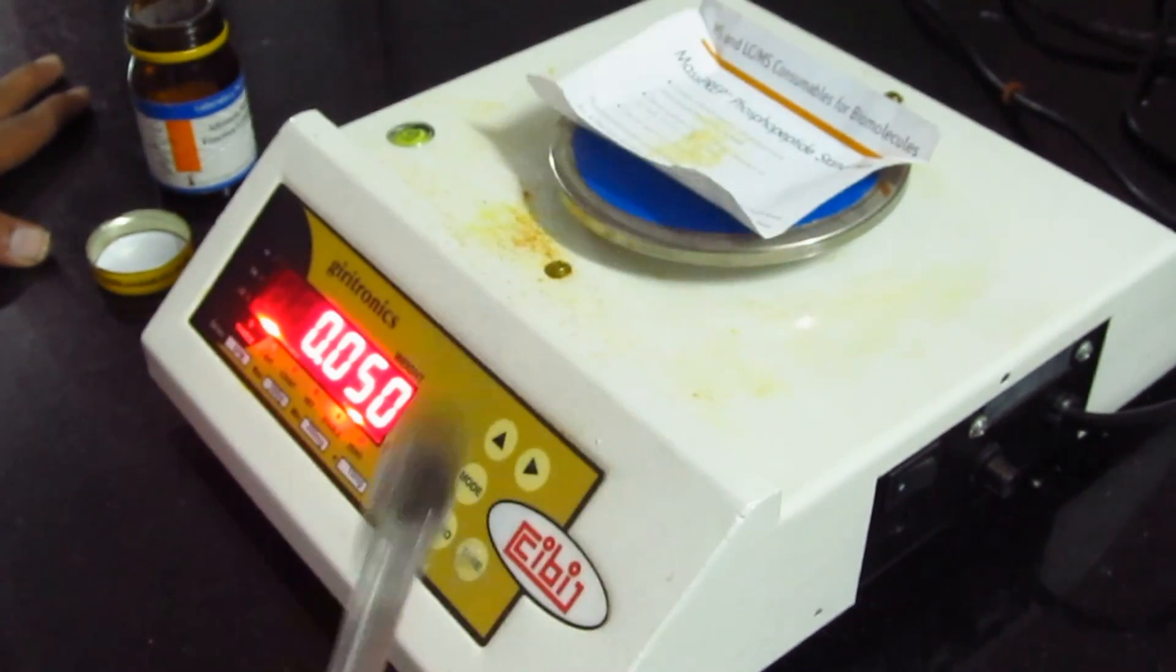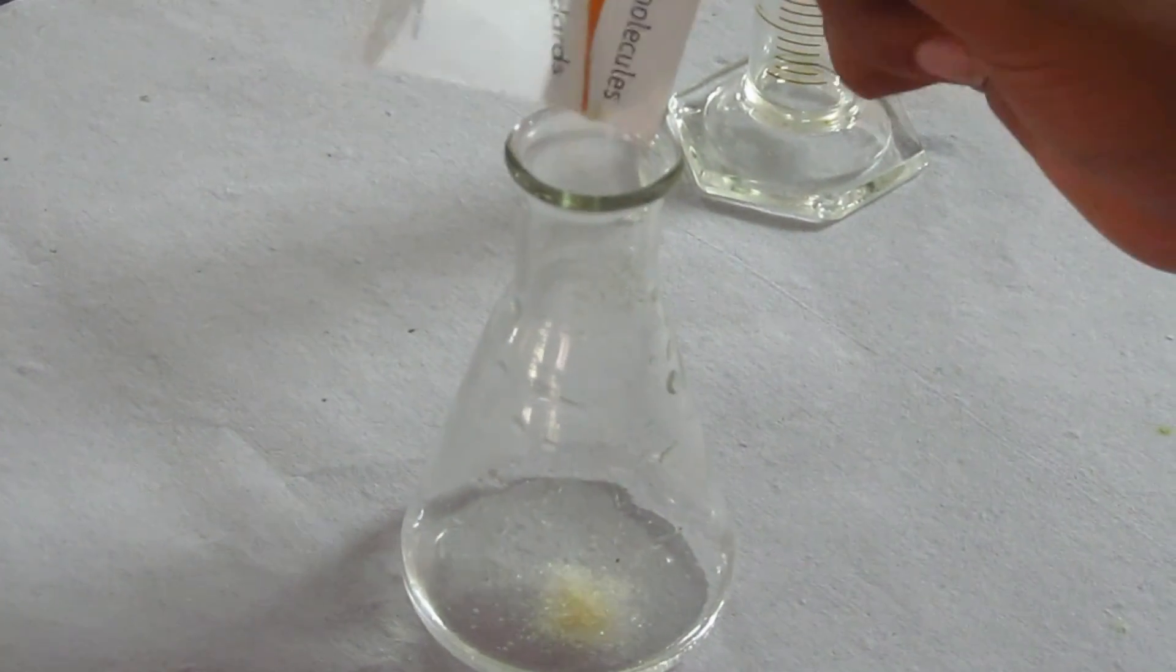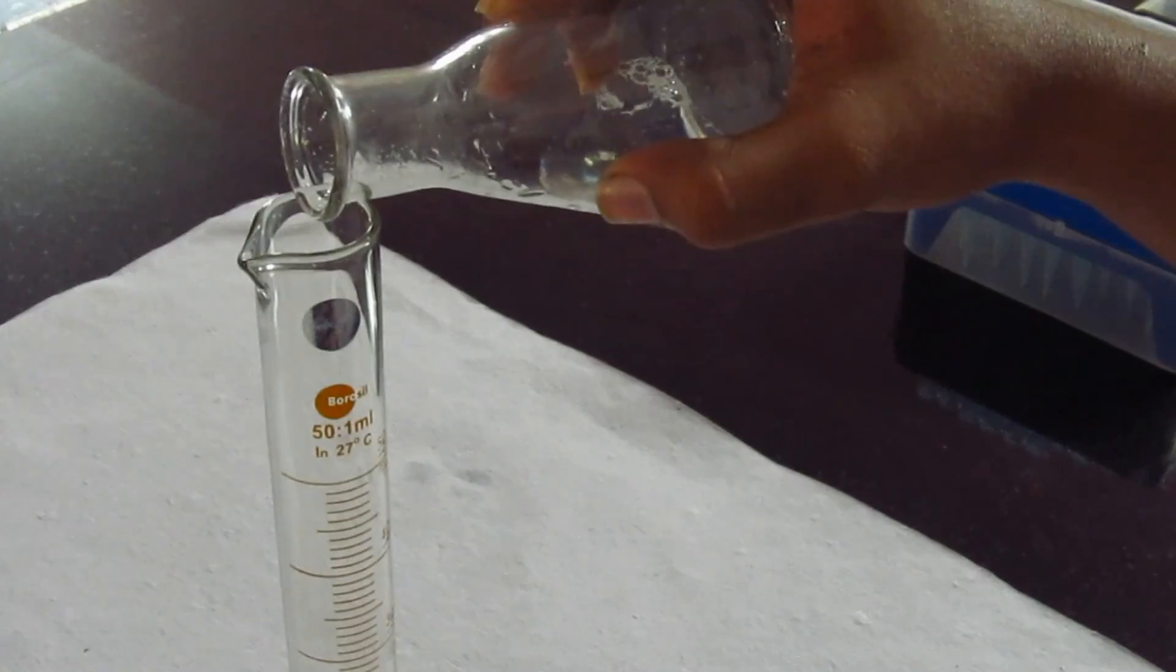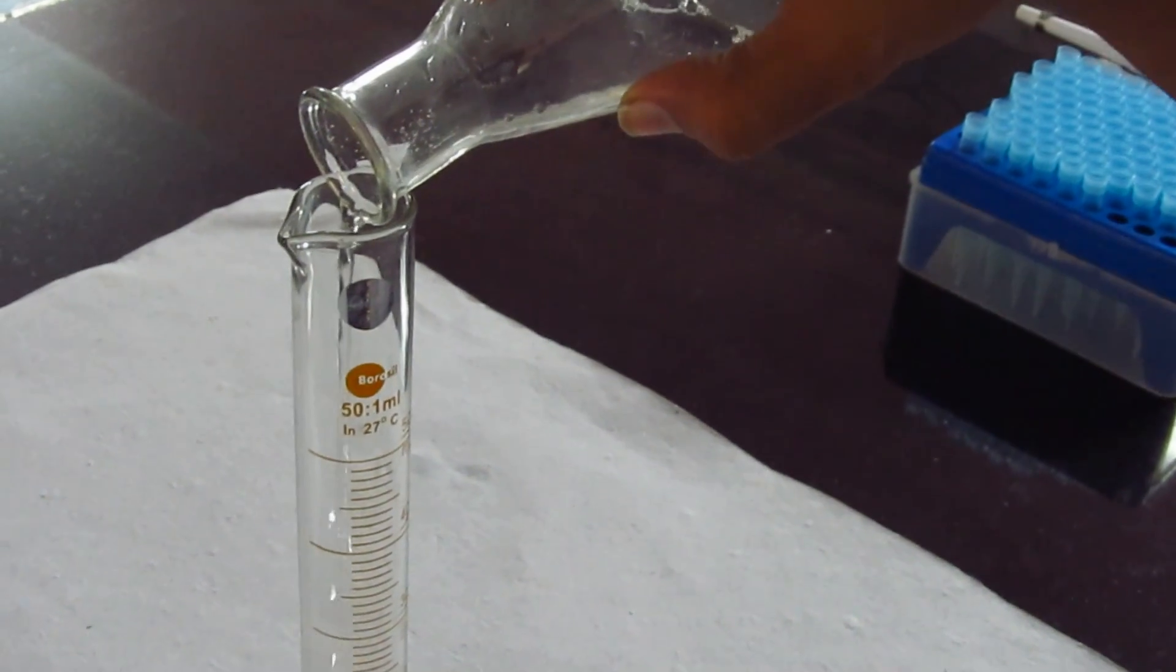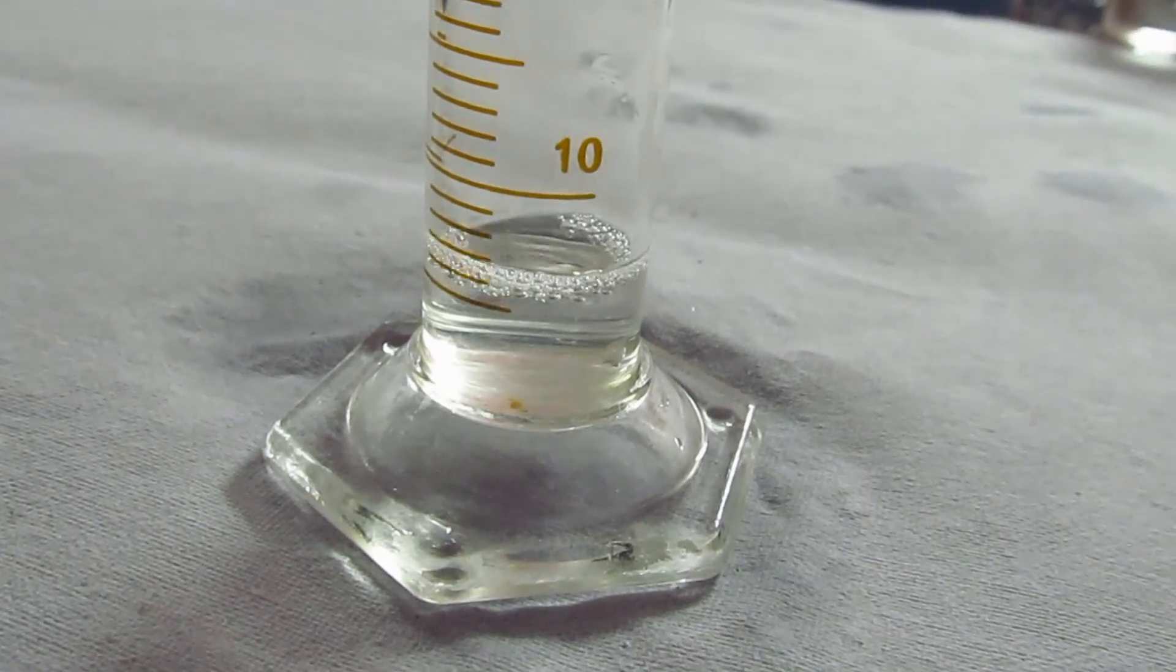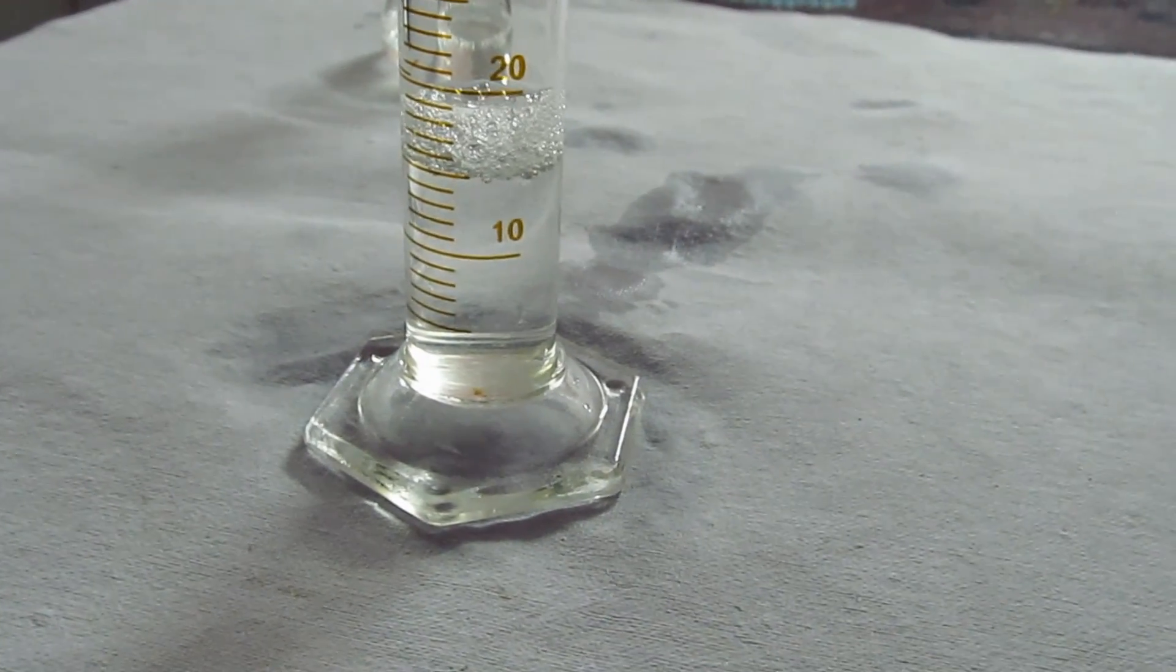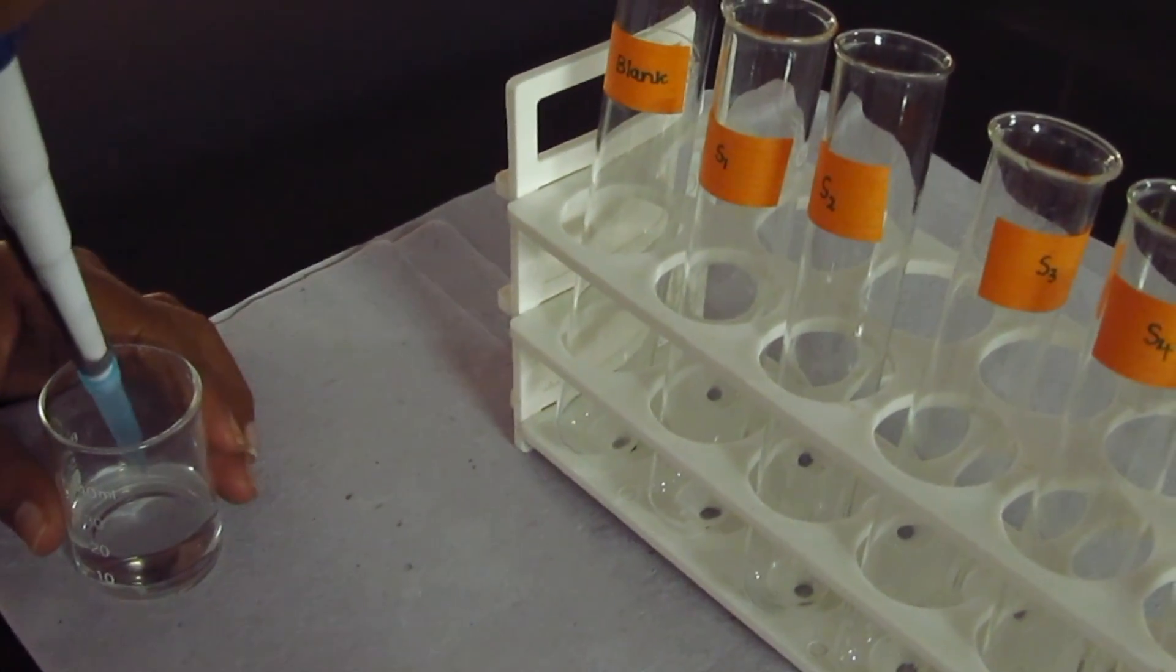Weigh 50mg of BSA and dissolve it in distilled water. After dissolving, make up the volume to 50ml using distilled water. 1ml of this solution contains 1mg of protein. Dilute 10ml of BSA stock solution to 20ml using distilled water. 1ml of this solution contains 500μg of protein. Use this as a working standard.